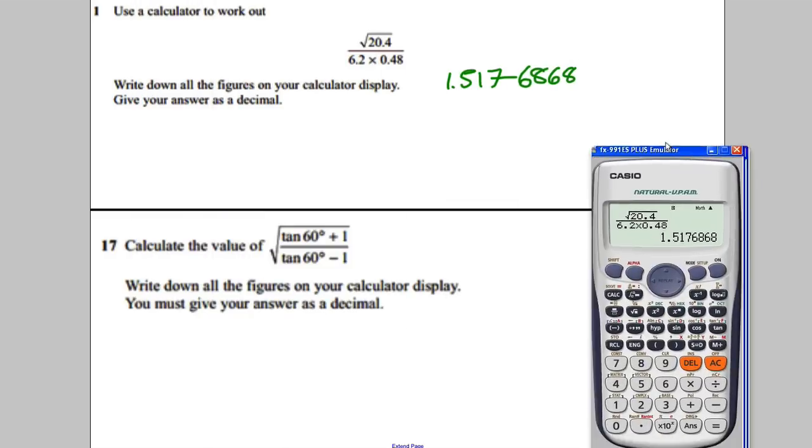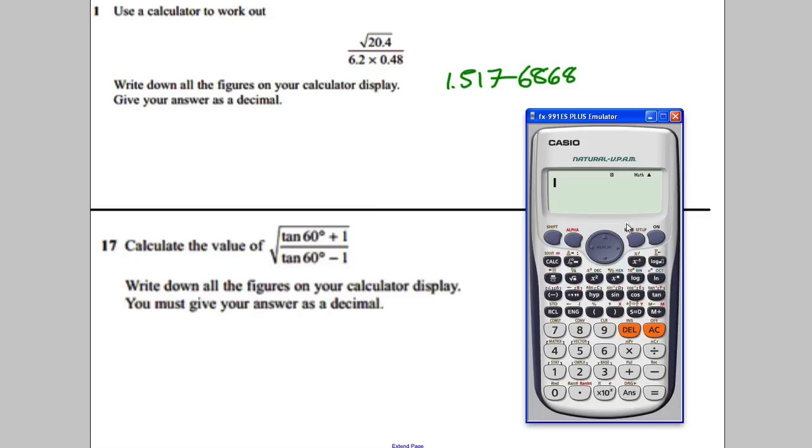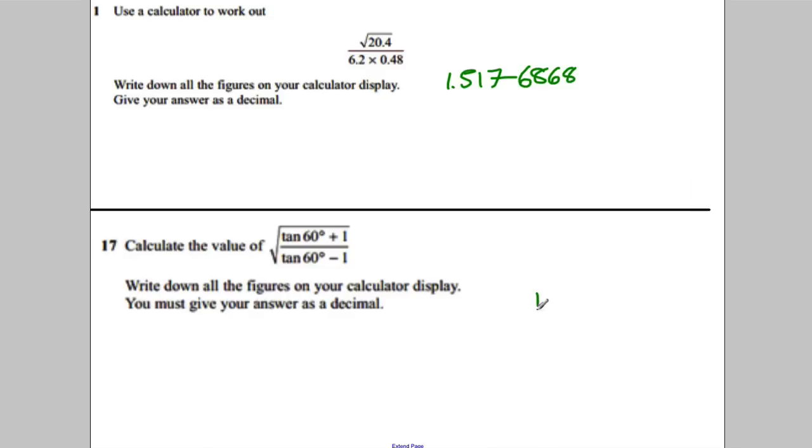In the next one, this is trig, check your calculator, it has D there, it does. Now watch this. Press the square root first, then you want a fraction under the square root, tan 60, close that bracket for 60, you must remember to do that, plus 1, over tan 60, close that bracket, subtract 1, and you press equals, and you get 1.39185165381653.